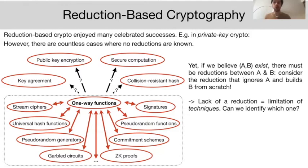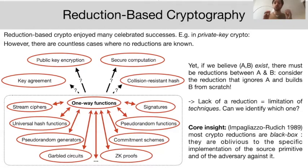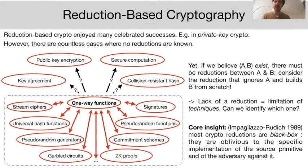Is it possible to identify what that limitation is? The crucial insight in this area was brought by Impagliazzo and Rudich in 1989. What they observed was that most cryptographic reductions are black box, meaning they are oblivious to the specific way the source primitive was implemented and also to the specific way the adversary against it is implemented.